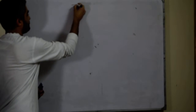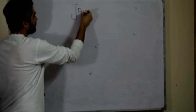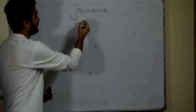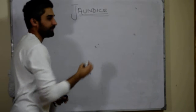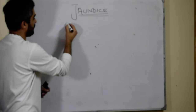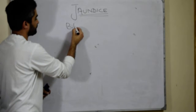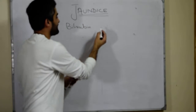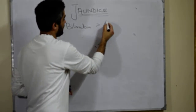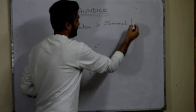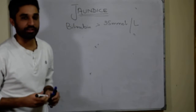Coming to another important topic, that is jaundice. Jaundice is a state when there is an increased level of bilirubin in the body. The level of bilirubin is more than 35 millimoles per litre.